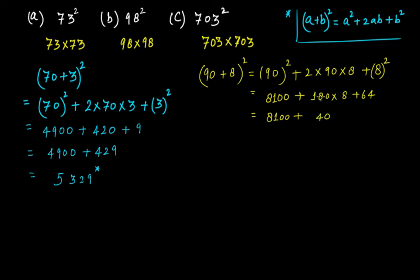And 64, 8 times 1 and 1440 plus 64. Now you can add them: this is 8100, right, and from here you get 1440, and this is 64. Simply add them.